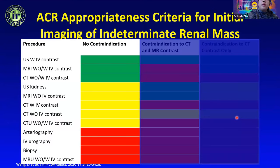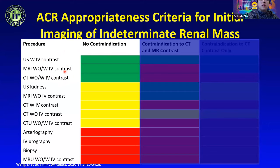When we think about the appropriateness criteria for the initial imaging of indeterminate renal masses, if the patient has no contraindications, the best choices are exams performed with IV contrast — be it CT, MRI, or ultrasound with contrast. In our practice we usually do either CT or MRI renal protocol.